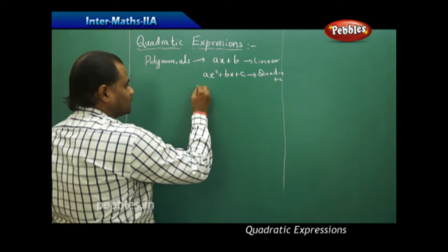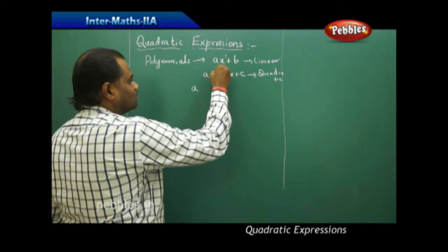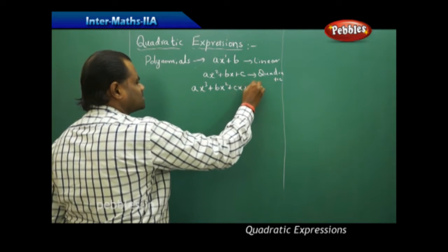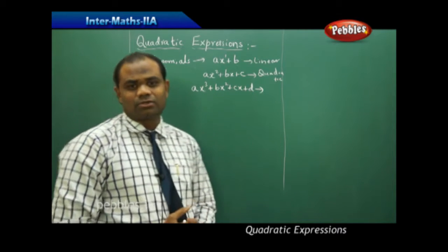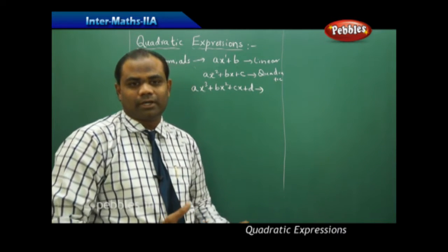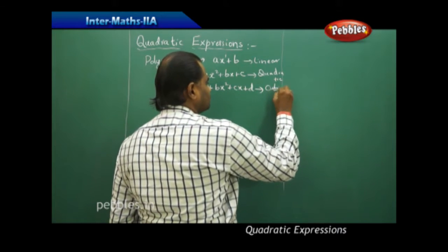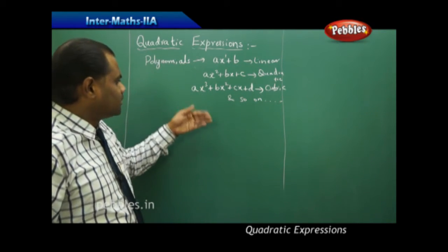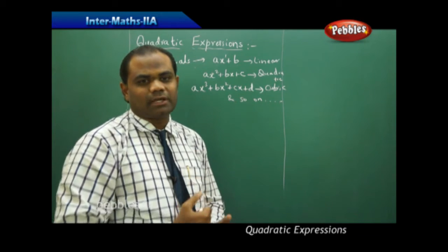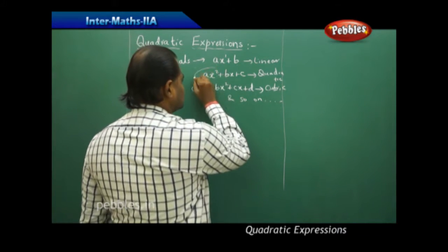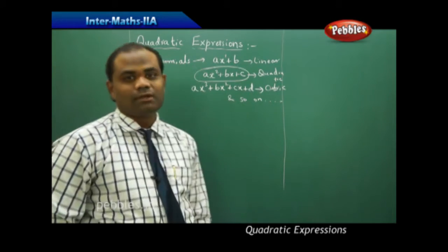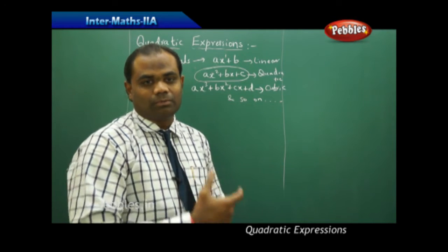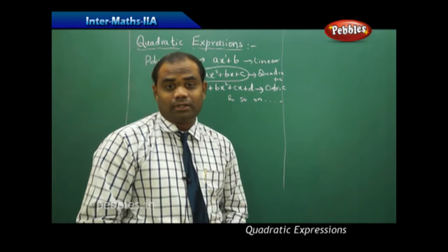Similarly, when I raise this to power 3 — with power 1, power 2, and power 3 — AX cubed plus BX squared plus CX plus D is called a cubic polynomial or cubic expression, and so on. As we increase the power of X by one unit, we get different types of expressions, of which AX squared plus BX plus C is called a quadratic expression. We are going to study the properties included in quadratic expressions.